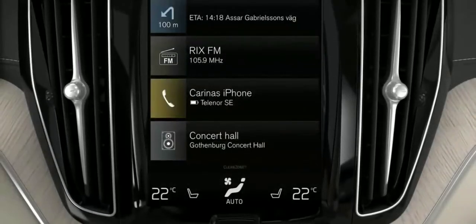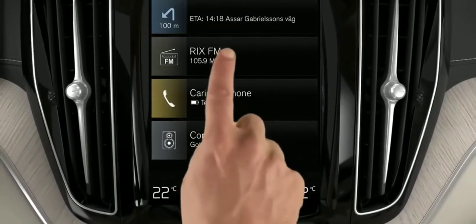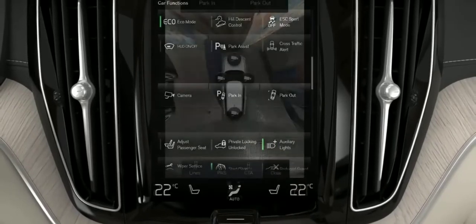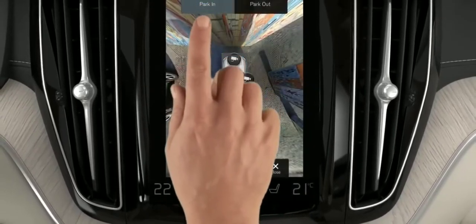When you approach an area where you would like to park, activate the Pilot by pressing the Park In button on the Function view or by pressing the button on the Camera view.